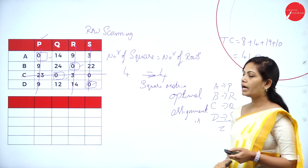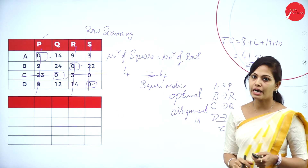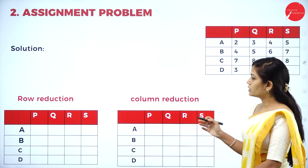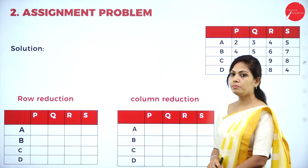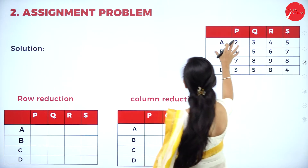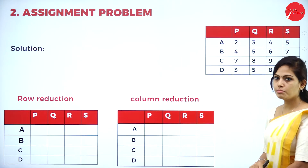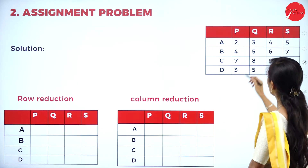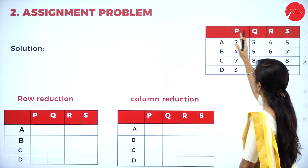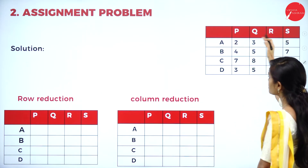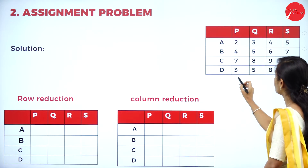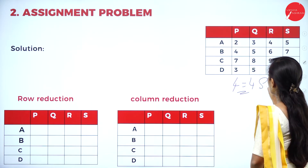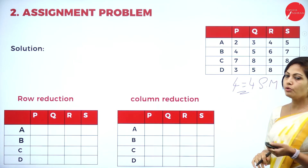This completes the first assignment problem using the Hungarian method. The next problem is also from a previous year question paper. We have rows and columns — first check whether it is balanced. It is balanced because the number of columns equals the number of rows: 4 columns and 4 rows. It is a square matrix, so we can proceed.